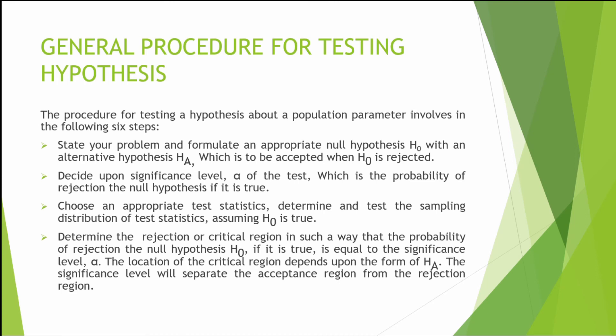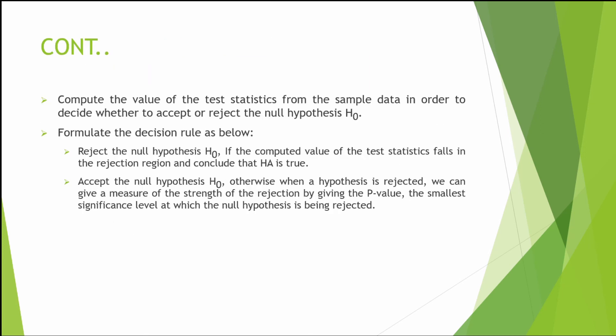Step two: decide upon the significance level alpha of the test, which is the probability of rejecting the null hypothesis if it is true. Step three: choose an appropriate test statistic and determine its sampling distribution assuming the null hypothesis is true. Step four: determine the rejection and critical region such that the probability of rejecting the null hypothesis equals the significance level alpha. The location of the critical region depends on the form of the alternative hypothesis, and the significance level separates the acceptance region from the rejection region.